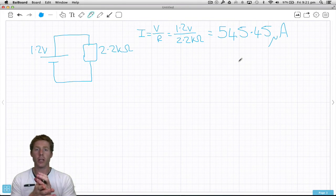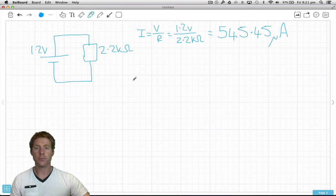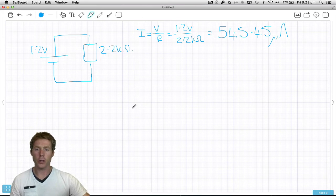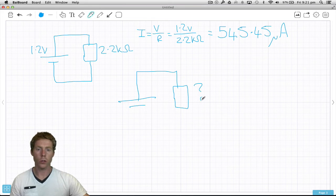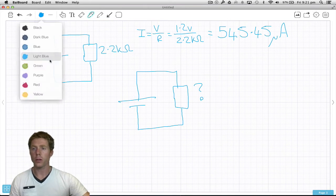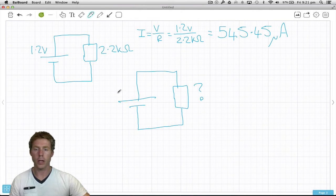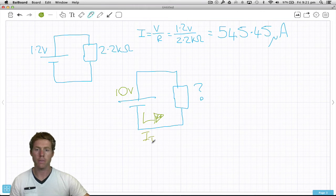One last calculation. Let's pretend we had a circuit like this. We didn't know what this resistance was, but we know the power supply is 10 volts, and we know the current IT. This is VA, voltage applied.